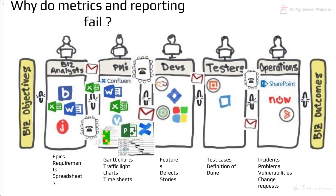Why do metrics and reporting fail? For many reasons. One of them is we are tracking work in different places, in different forms. So you have epics, requirements, spreadsheets. Project managers who are using Gantt charts, traffic light charts, timesheets.